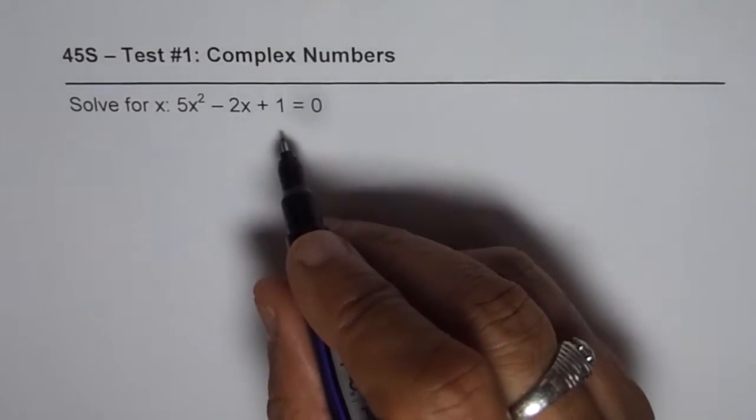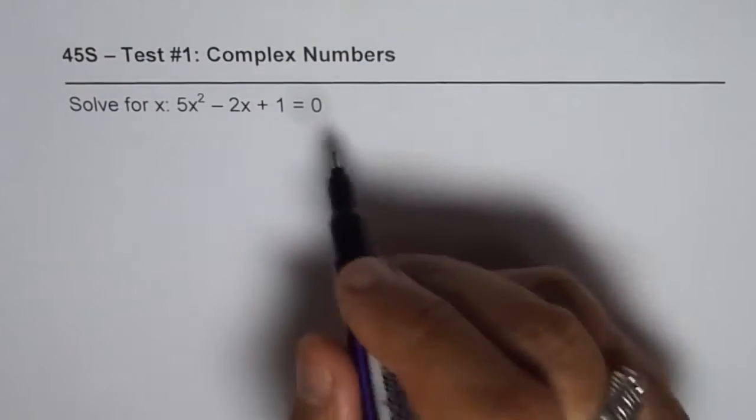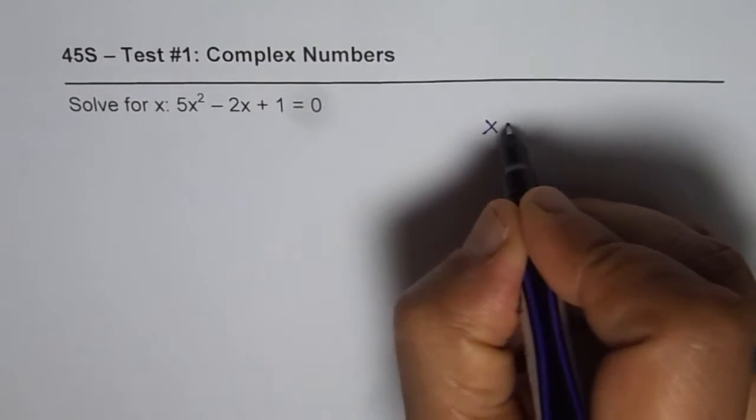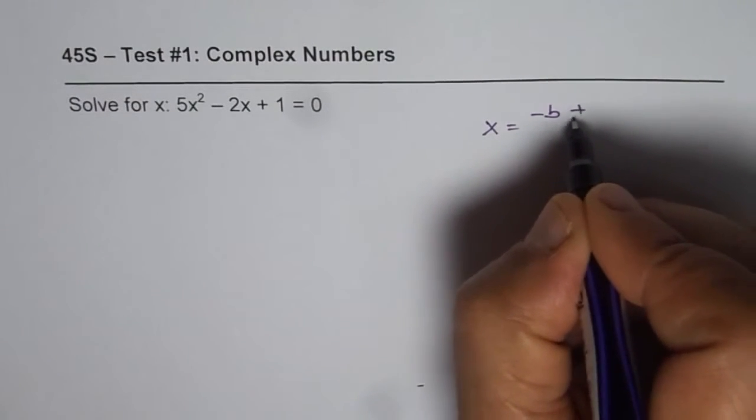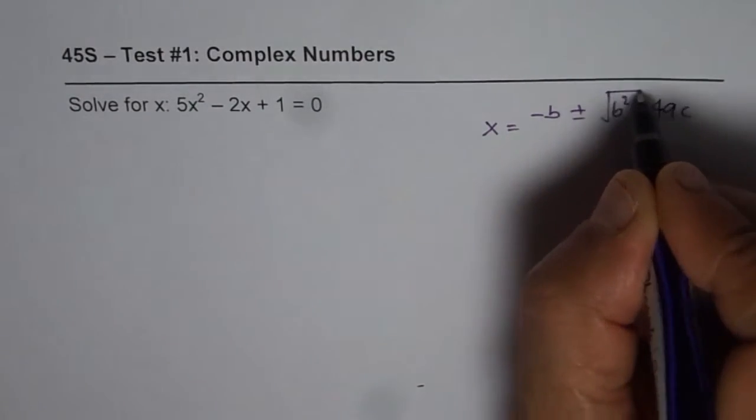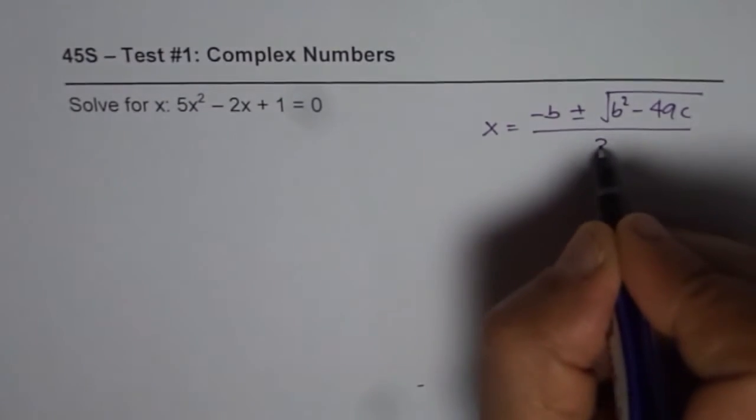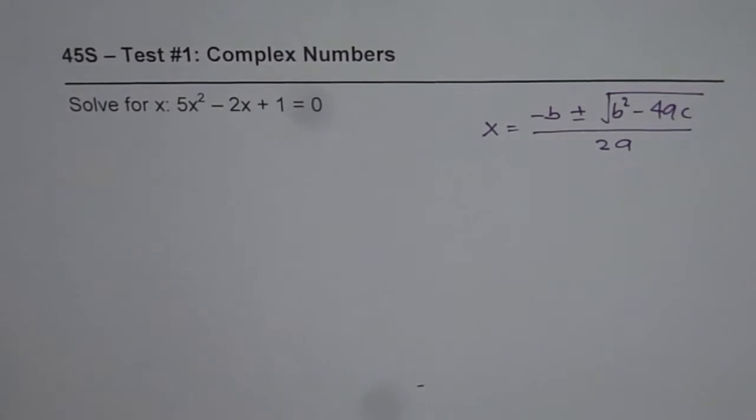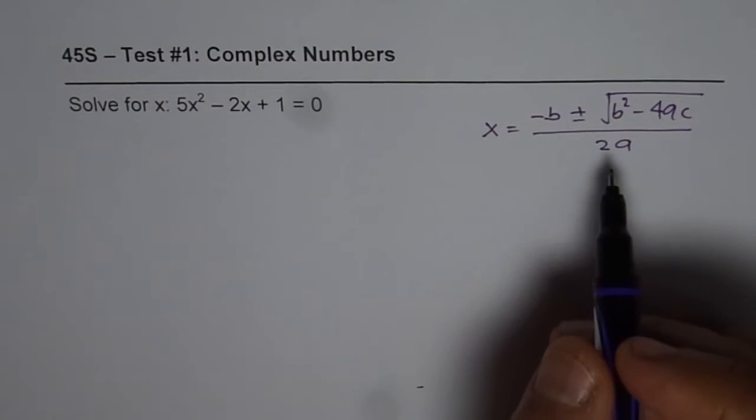We can apply the quadratic formula and then solve it, which is x = (-b ± √(b² - 4ac)) / 2a. So that is one way of doing it. The other way is factoring, but let us apply the quadratic formula and find the answer.